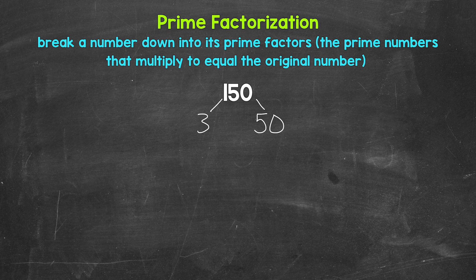Now let's continue to break this down. We have three and 50. Now three is a prime number, so we are done here. We can't break that down any further. So let's circle three to show that we have a prime number.